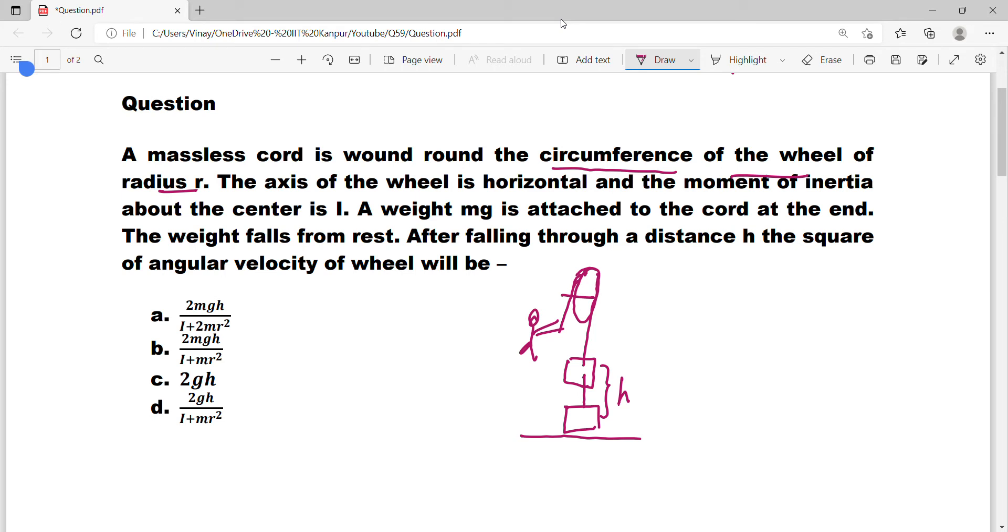At height H, when the bucket was here, it had some potential energy. The bucket's mass m, so mgh. The bucket starts from rest, so the bucket's velocity is zero. So the bucket has only potential energy because kinetic energy is zero.